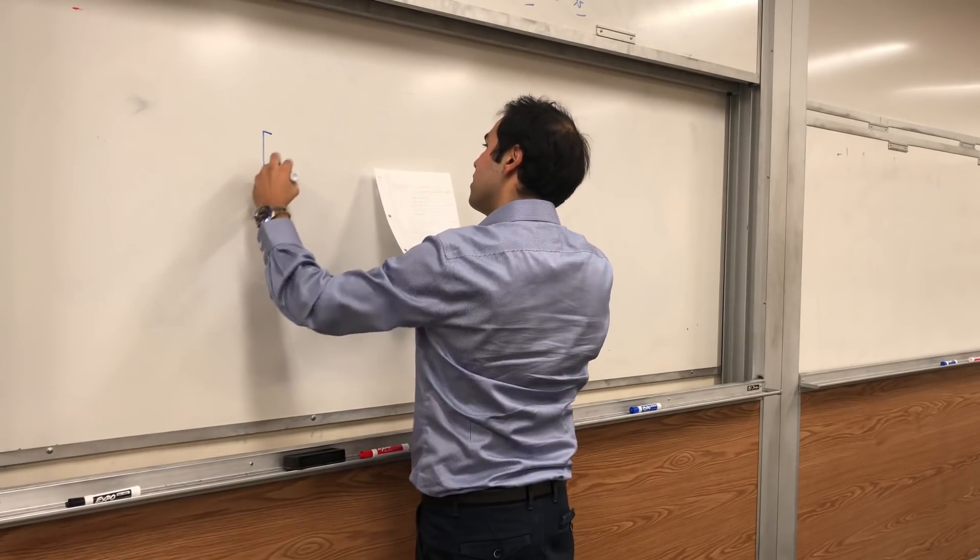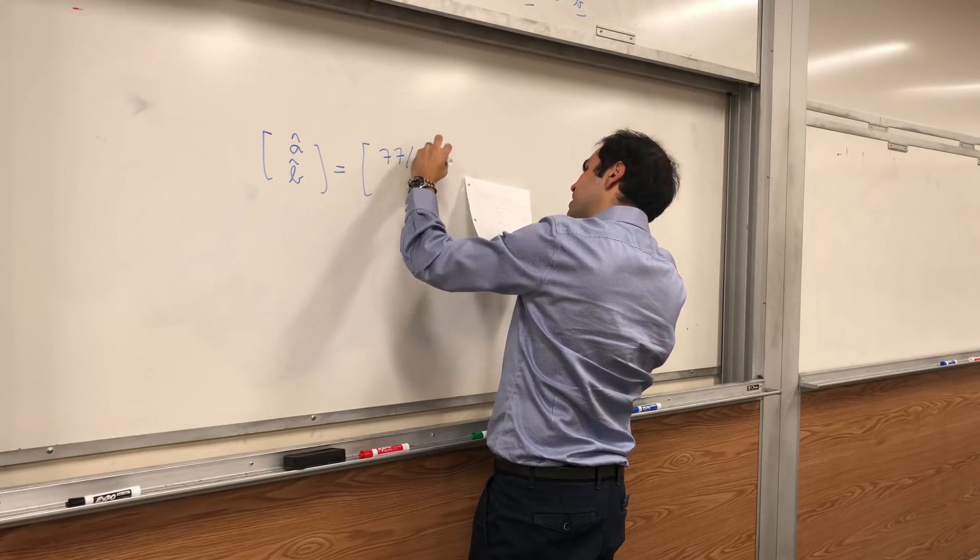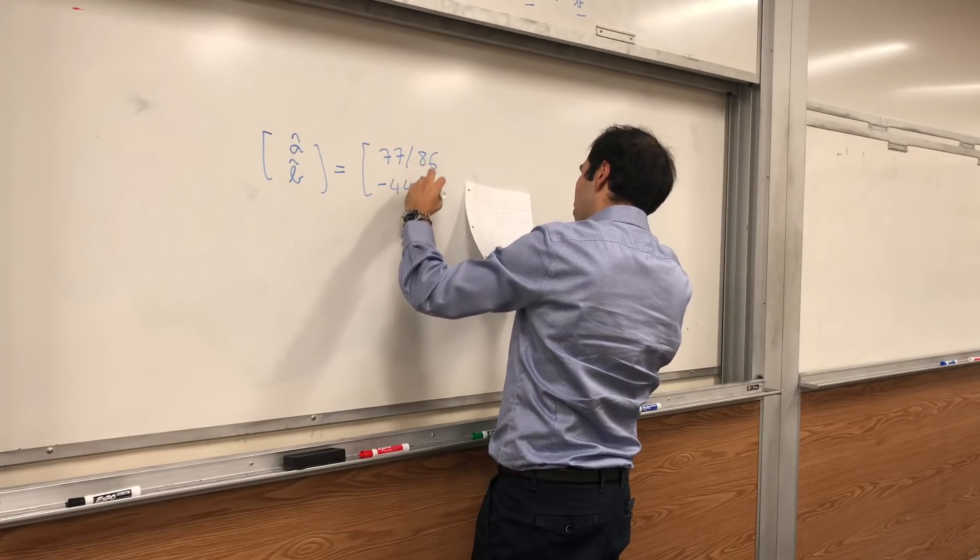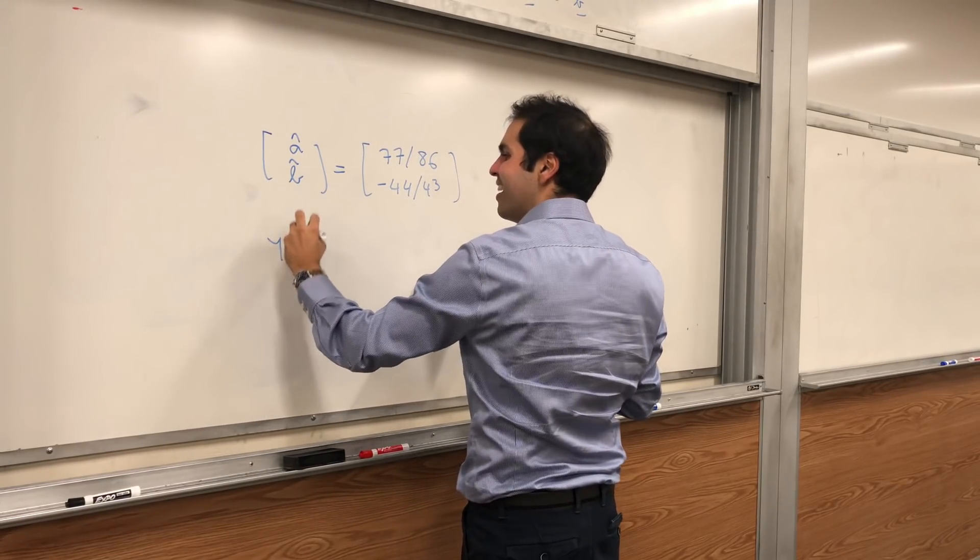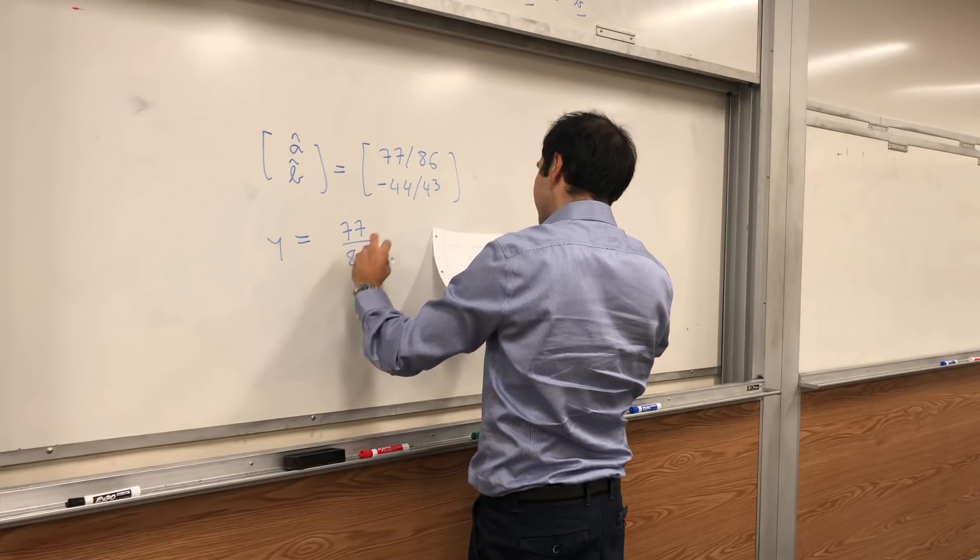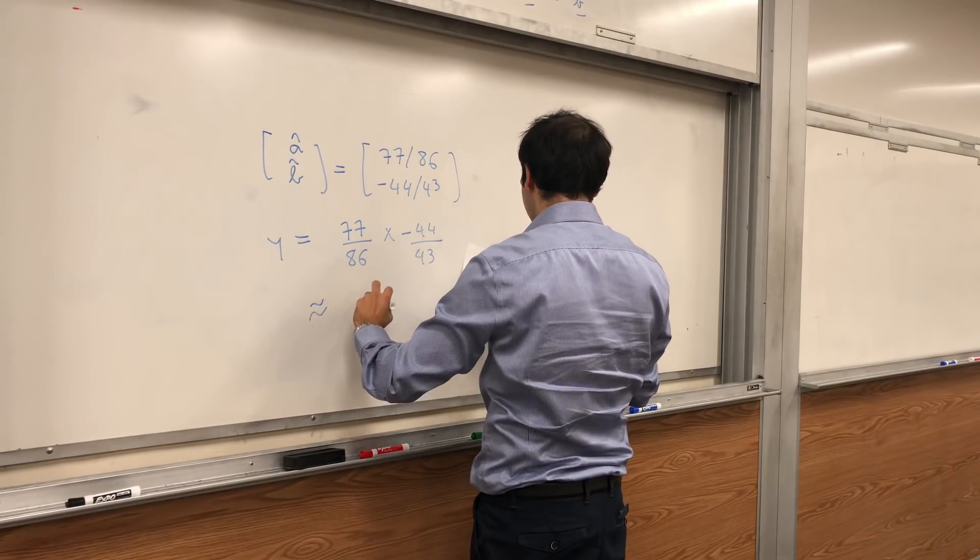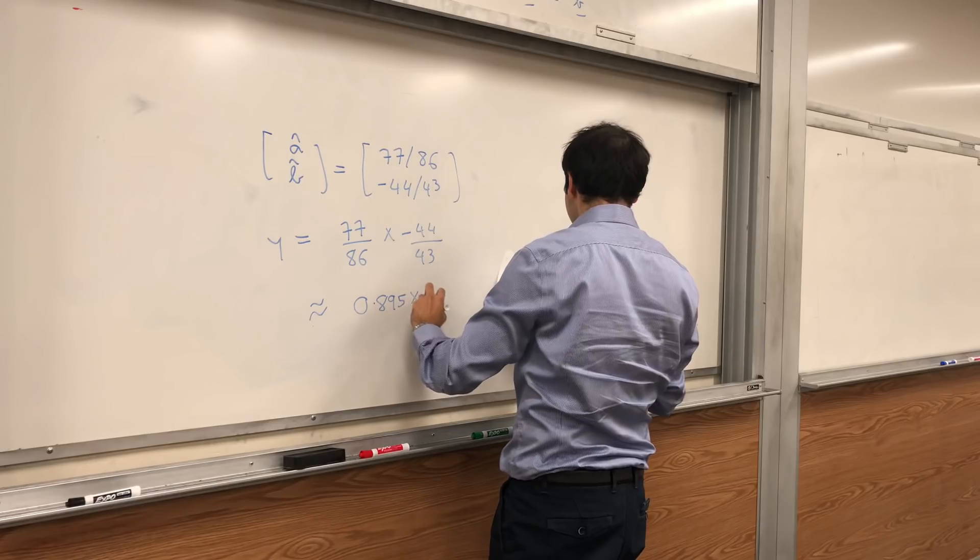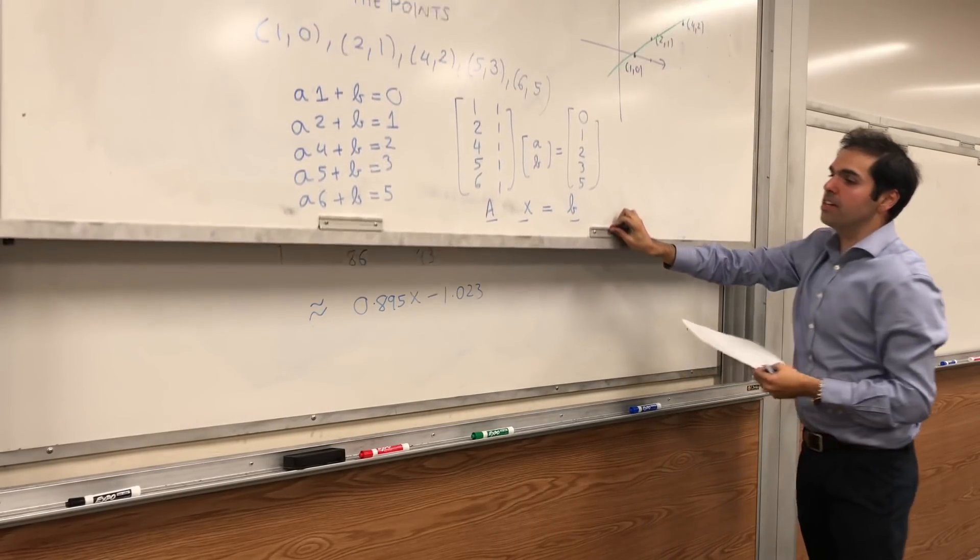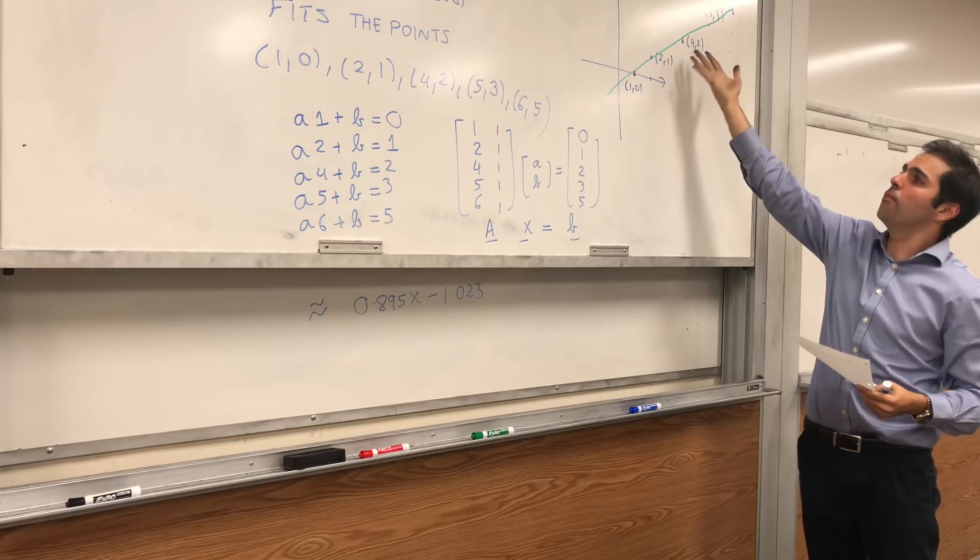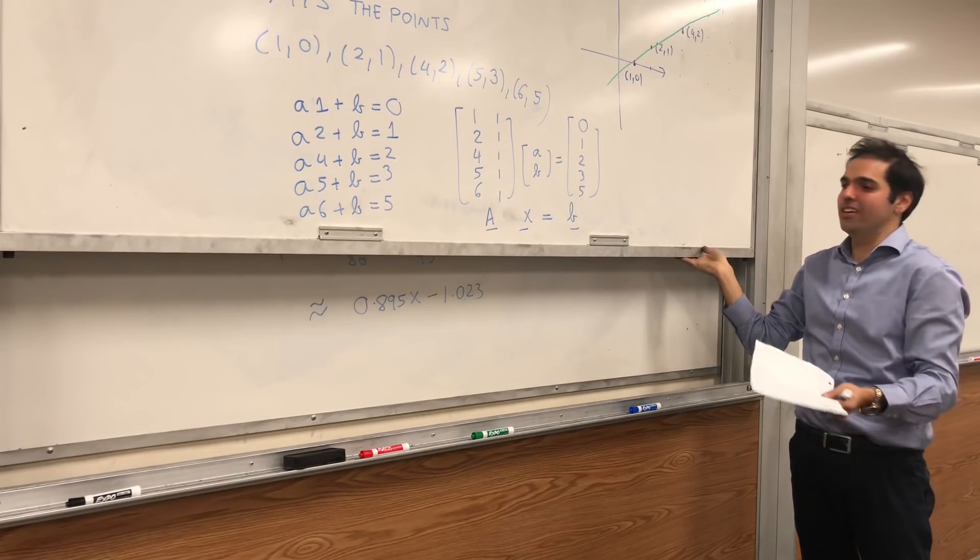And therefore, our regression line would be y equals 77 over 86 x minus 44 over 43, which is roughly 0.895x minus 1.023. Which, to be honest, kind of makes sense in this picture, because this line almost has slope 1, so 0.895, and it almost has y-intercept minus 1, which is fine.